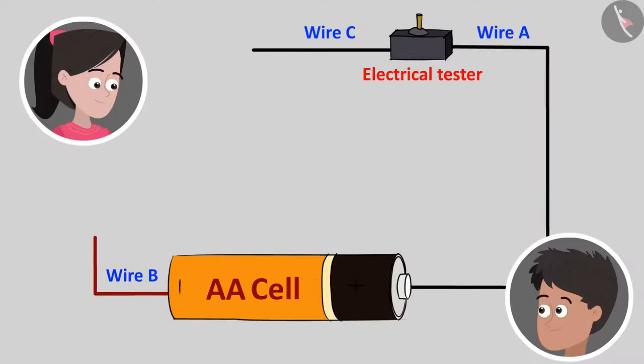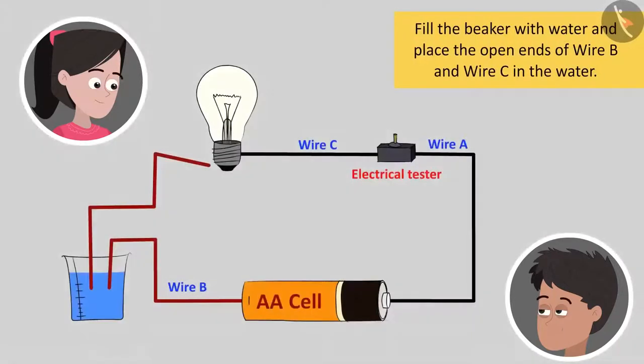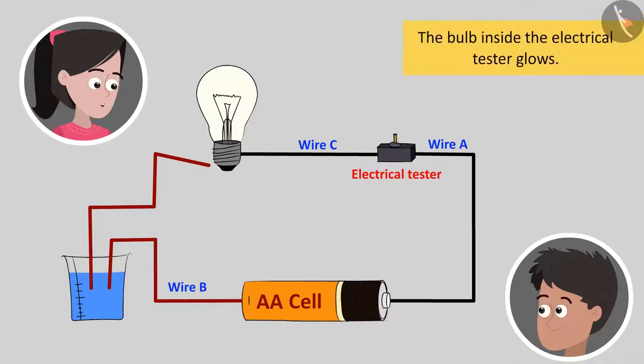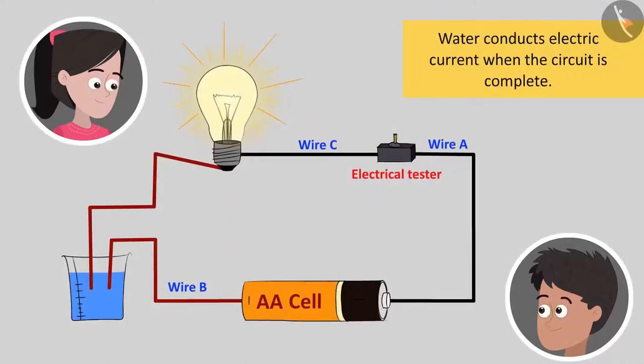What do we do now, Bhaiya? Now, let me fill the beaker with water and you can place the open ends of wire B and wire C in the water. Also, let us connect a bulb at the other end of the electrical tester. Oh, wow, Bhaiya. The bulb at the other end of the electrical tester has lighted up. Yes, Sanya, this indicates that our circuit is complete and therefore means that water conducts electric current.